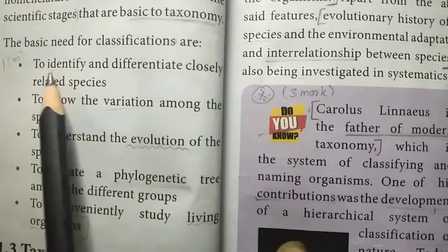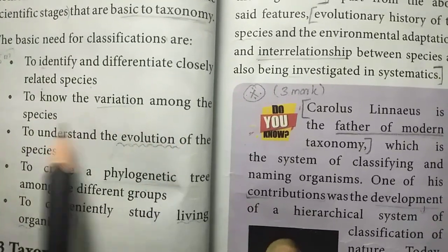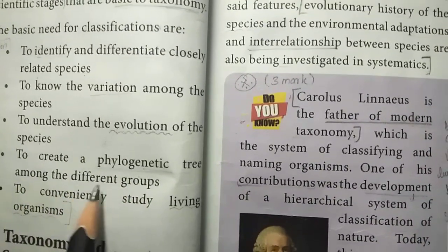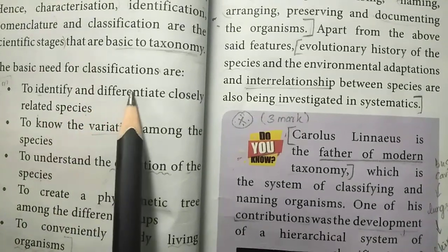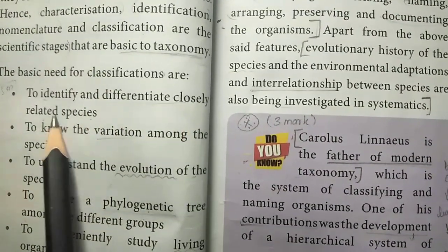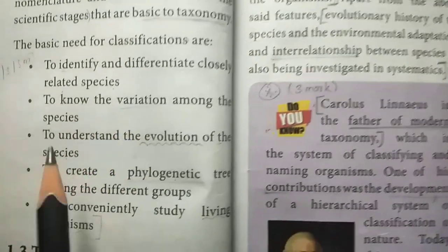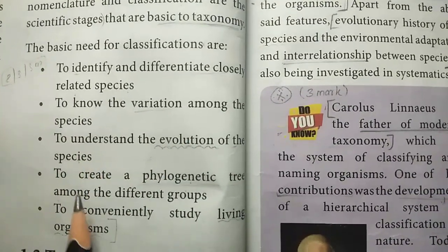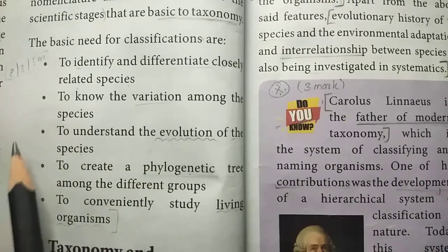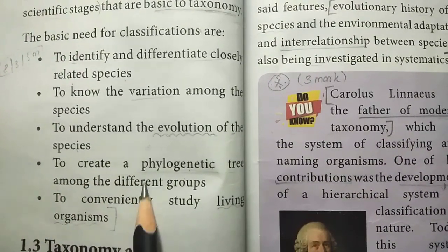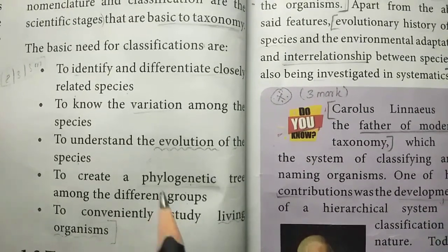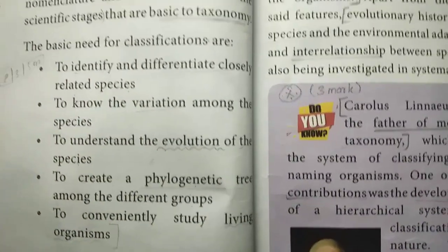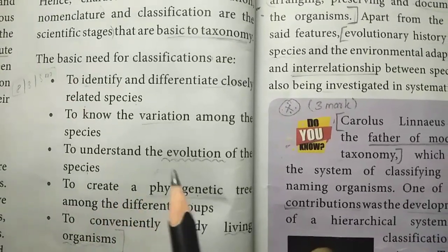List out the basic needs for classification: to identify and differentiate closely related species, to know the variation among the species, to understand the evolution of the species, to create the phylogenetic tree among different groups, and to study living organisms.